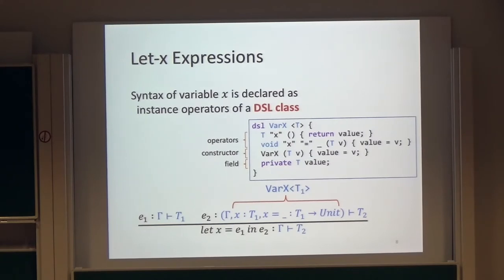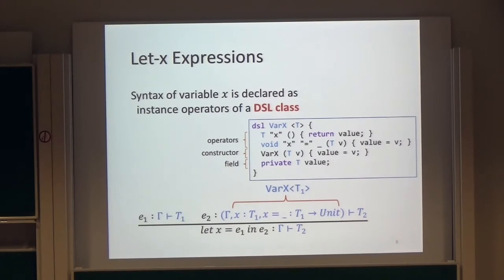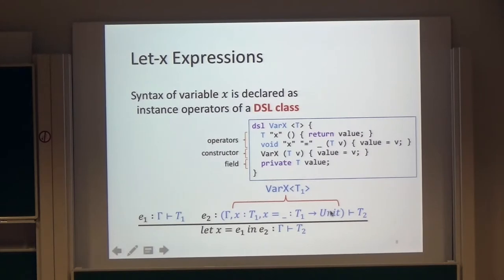From here, we show how to implement let expressions in ProTJ2. For ease of understanding, we first show the implementation of let expressions that bind the fixed name X. In ProTJ2, get X and set X equal underscore are defined as instance operators of a DSL class.